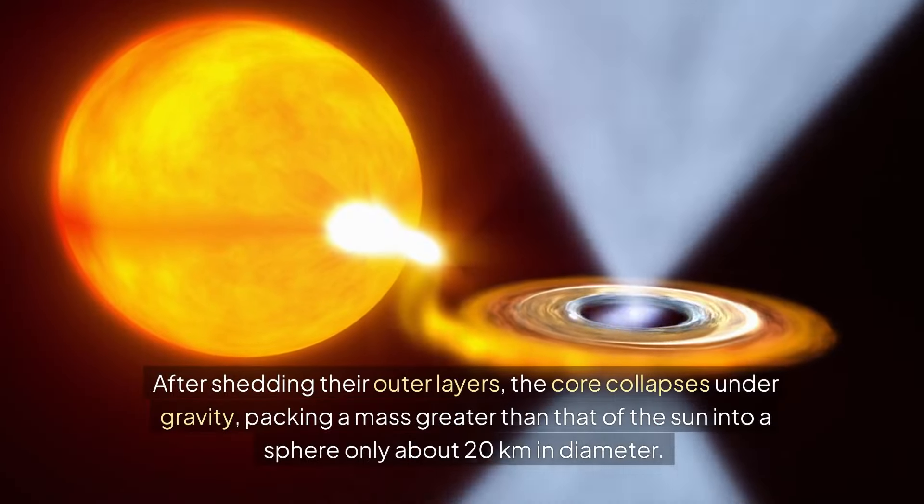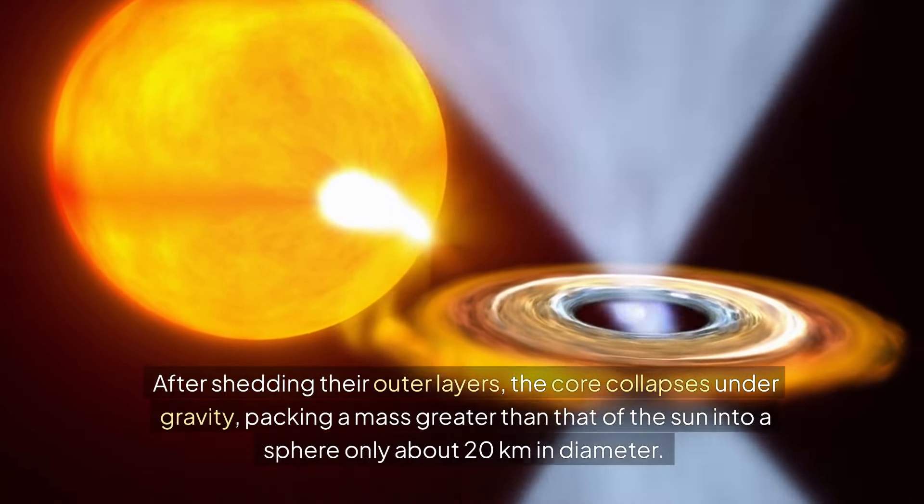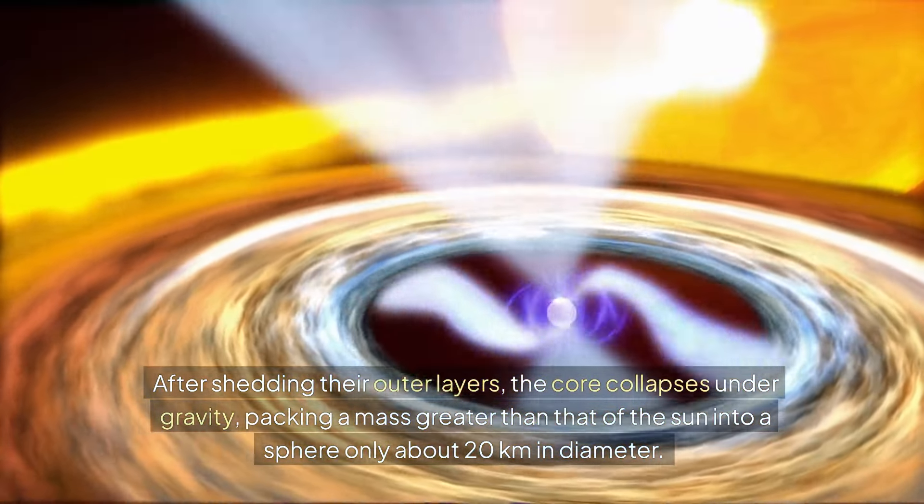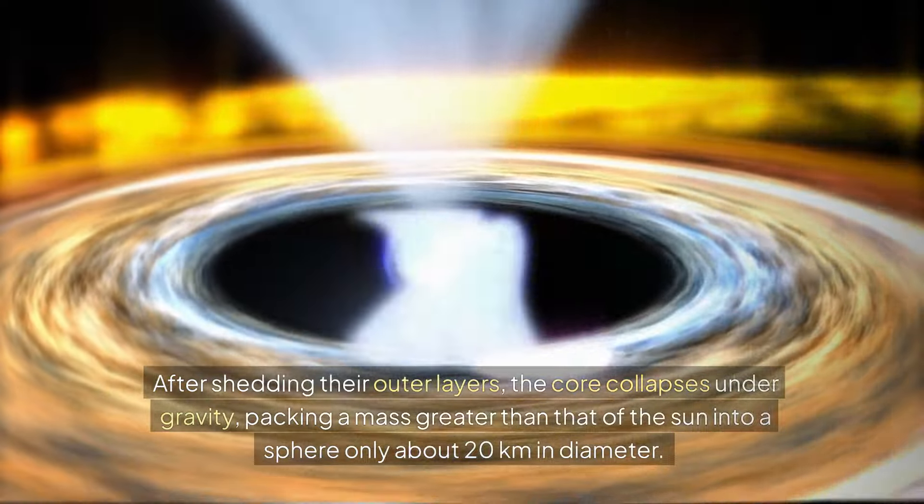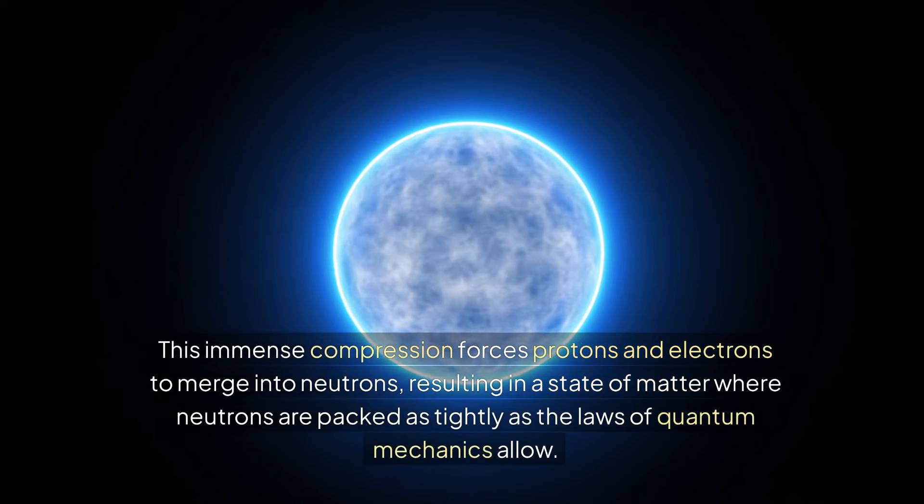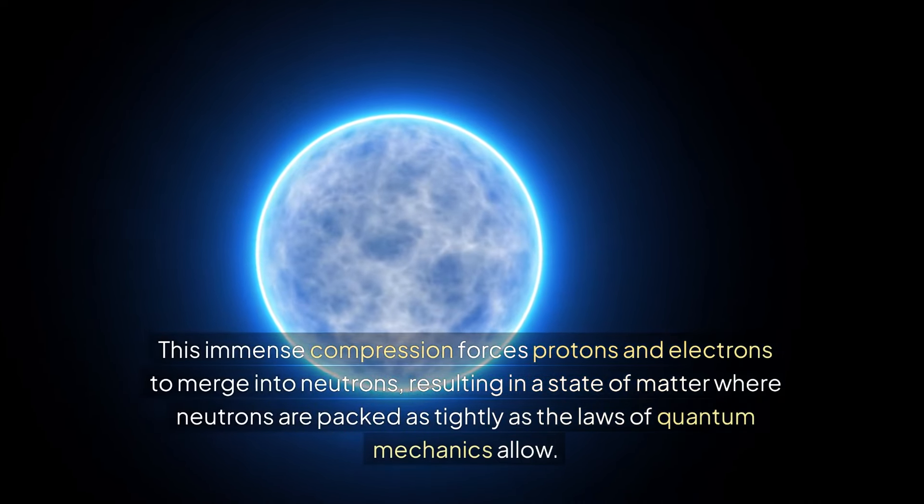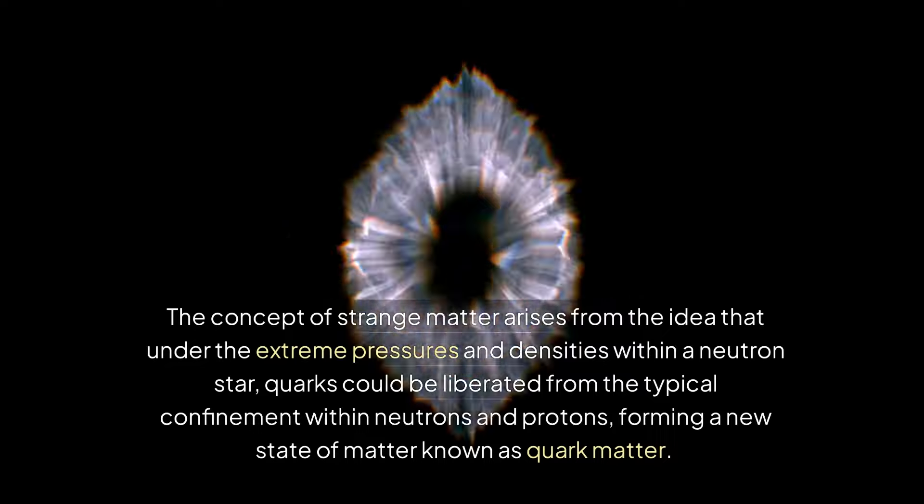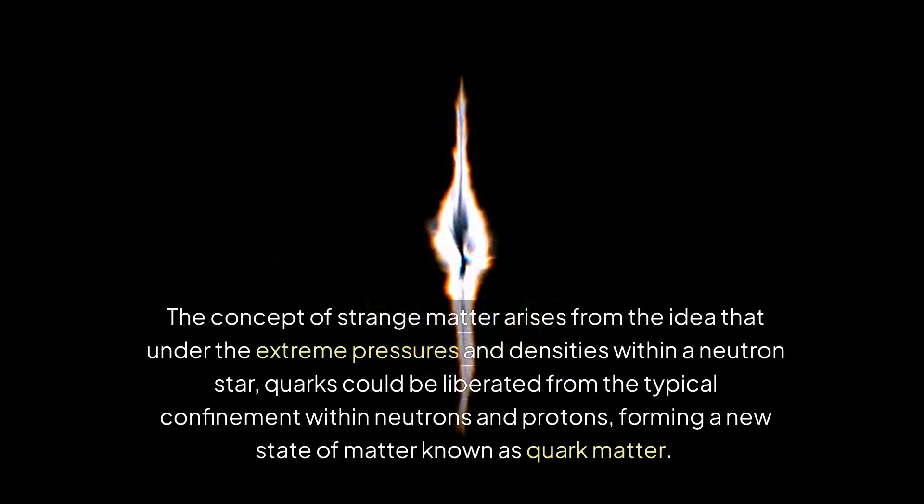Neutron stars are the remnants of massive stars that have undergone supernova explosions. After shedding their outer layers, the core collapses under gravity, packing a mass greater than that of the Sun into a sphere only about 20 kilometers in diameter. This immense compression forces protons and electrons to merge into neutrons, resulting in a state of matter where neutrons are packed as tightly as the laws of quantum mechanics allow.